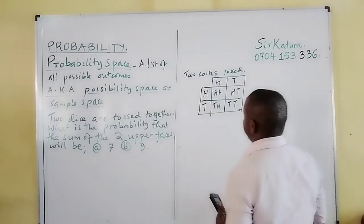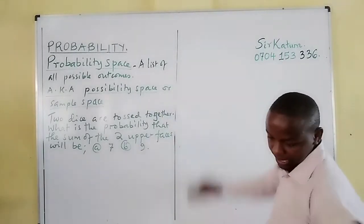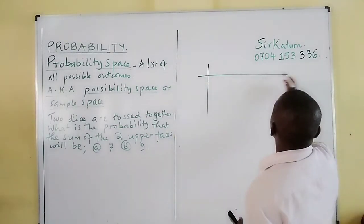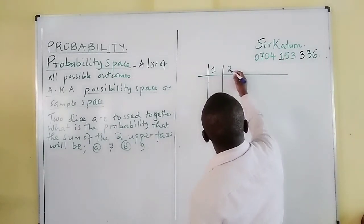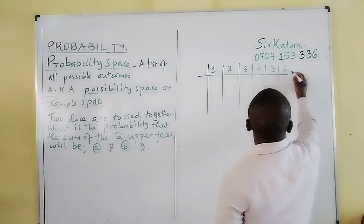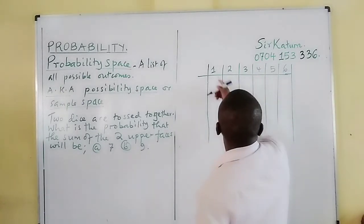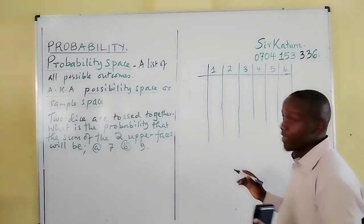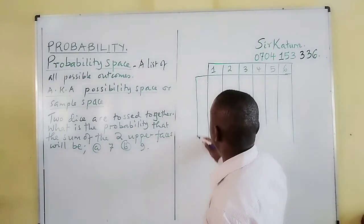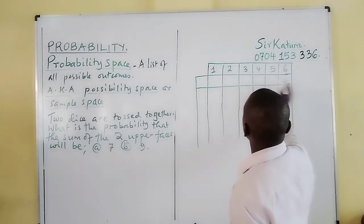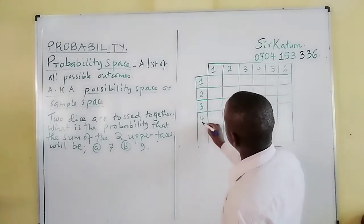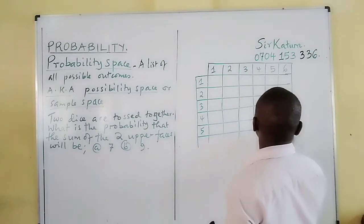It is good to know that a die is numbered or labeled one up to six. Therefore the first die has labels one, two, three, four, five, six. The second die, because we are told two dice, also has one, two, three, four, five, and six.